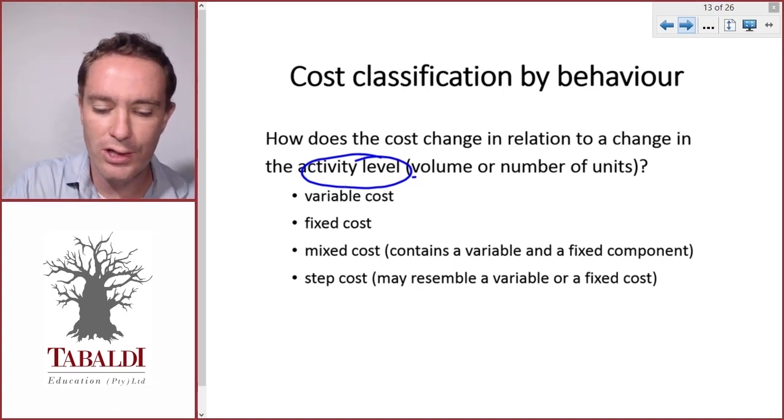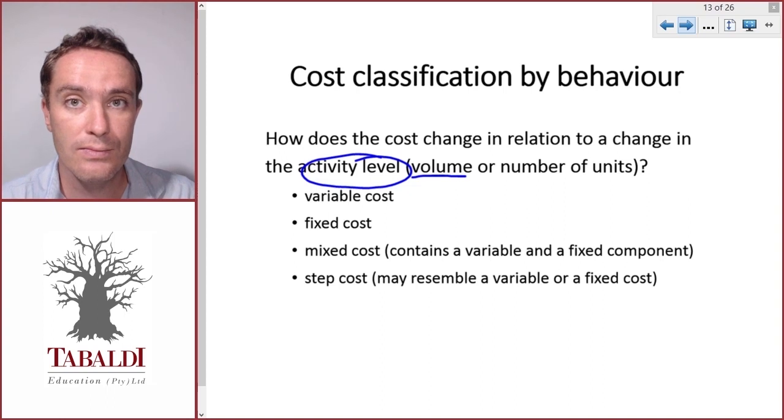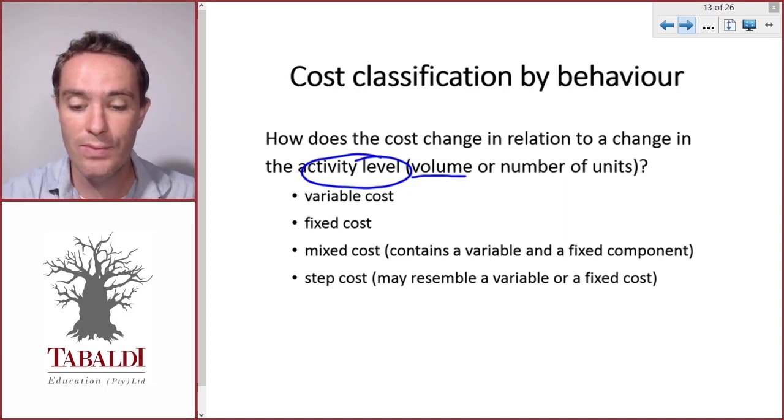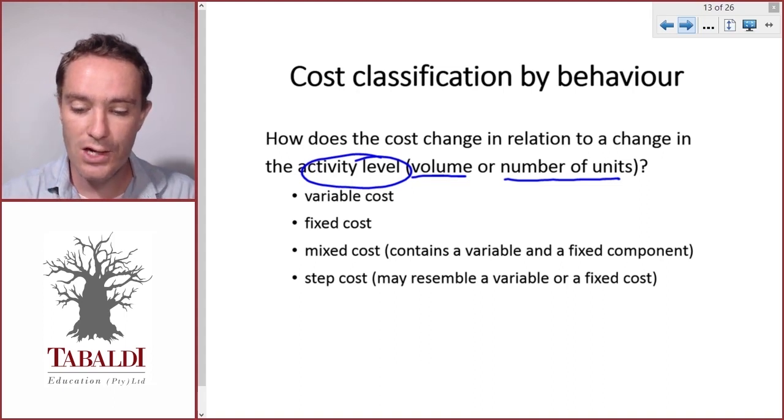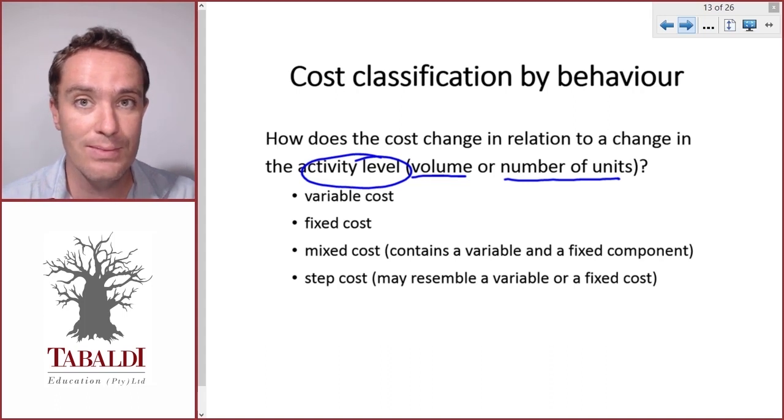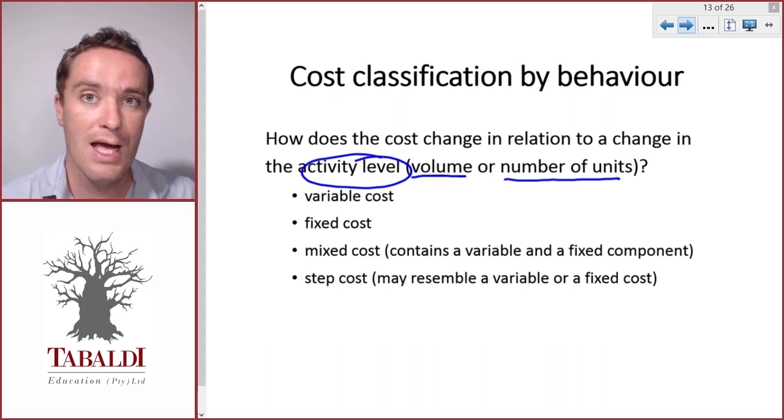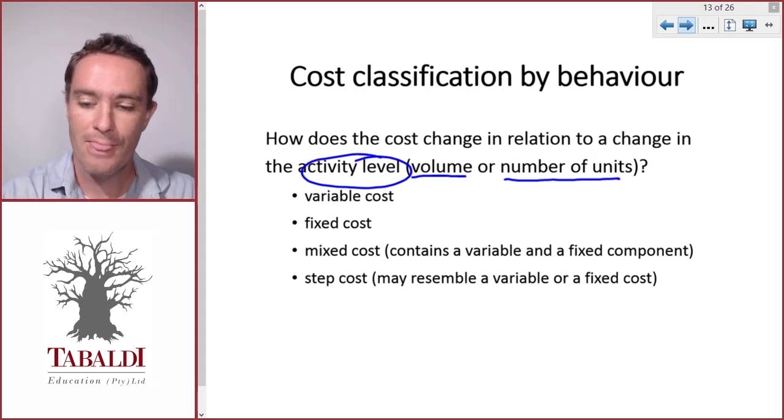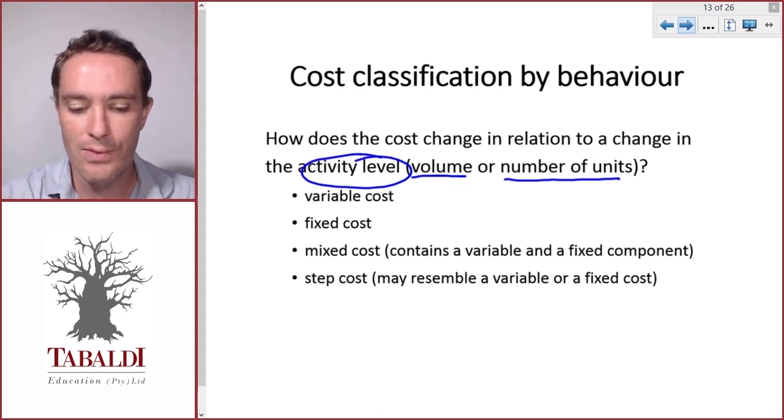Sometimes they also refer to that as volume. So, activity level or volume is simply the number of units. So, in our case, the number of tables. Some costs will increase as we increase the number of tables and others will not increase. And some might increase in weird ways that we don't expect. So, that's what we'll look at when we classify costs by behavior.